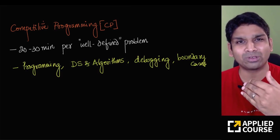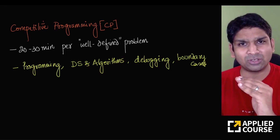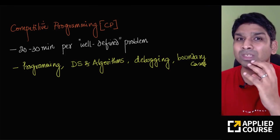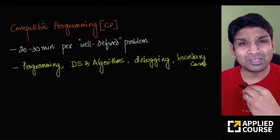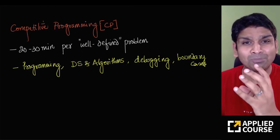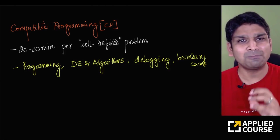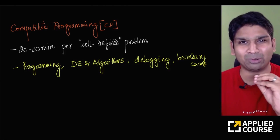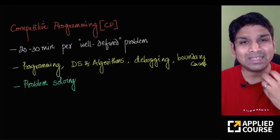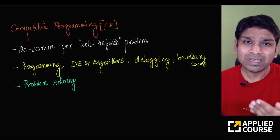The skills you need for competitive programming are: programming knowledge in any major programming language of your choice, foundational understanding of core data structures and algorithms, the ability to debug your code and understand where it's going wrong, and how to write edge cases or boundary cases. These are the four most important skills. Competitive programming is trying to help you build problem-solving skills — that's what it is also testing you for.